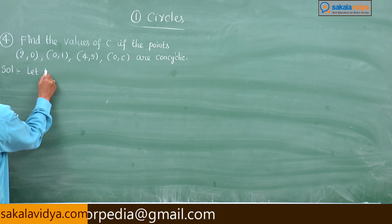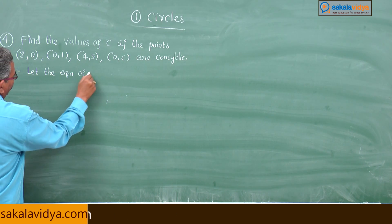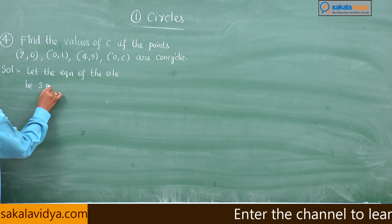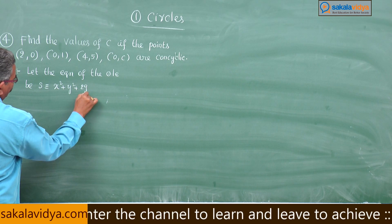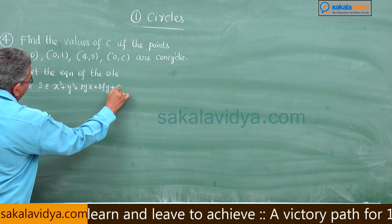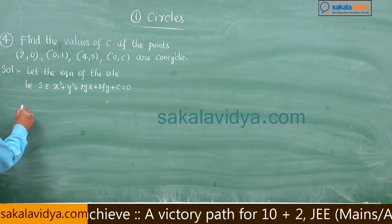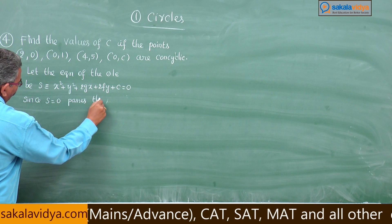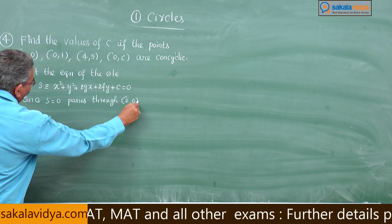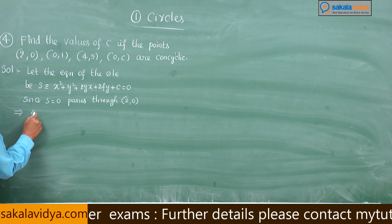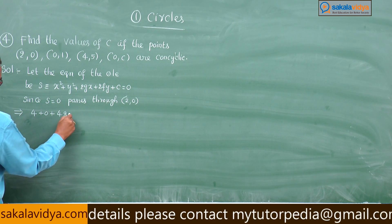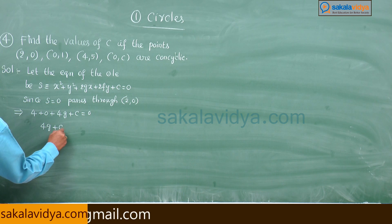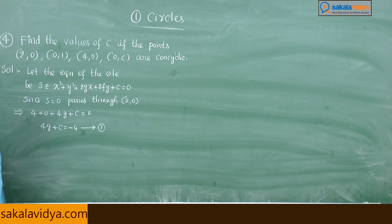Let the equation of the circle be S = x² + y² + 2gx + 2fy + c = 0. Since S = 0 passes through (2,0), substituting gives 4 + 4g + c = 0, so 4g + c = −4. Call this equation 1.